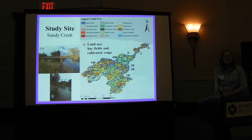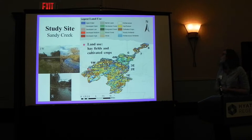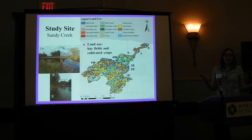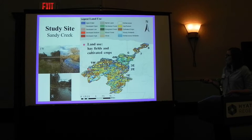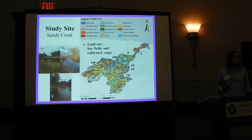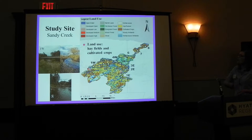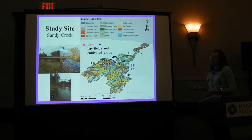My study site was Sandy Creek. It's located in Western New York, near Brockport. I chose 12 sites throughout the river system. Site 8 is closest to the mouth of the river system. At site 5, the stream actually splits into two branches — the east and the west branch — so I have two headwater sites, site 1E and 1W. These are located where they are because beyond this point it was too shallow to electrofish. The land use pretty much stays the same throughout the river system — mostly hay fields and cultivated crops.